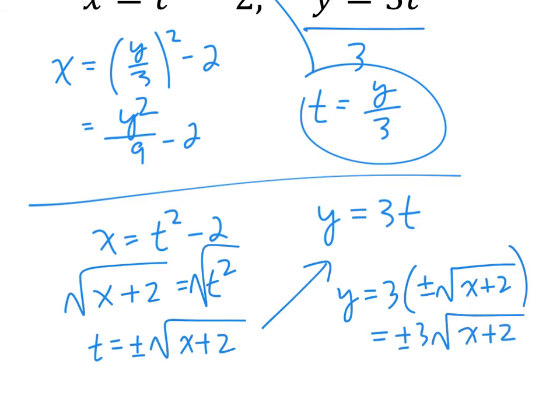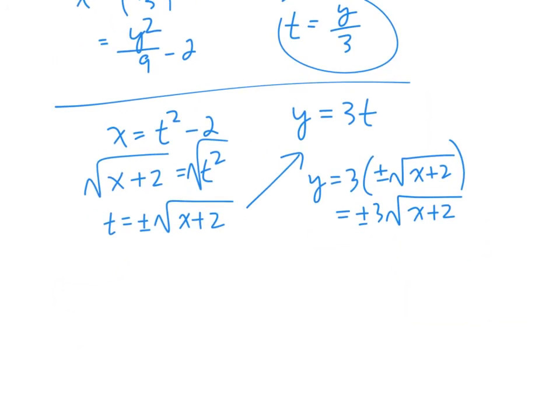Let's talk about what happens if you don't have the plus or minus. When you have a square root graph, remember it goes like a one-wing bird. If you don't have a plus minus, you will only have the positive version — that's the one wing. But this is actually a sideways parabola, so it needs the negative version to create the full parabola. Make sure you do have that plus minus. So this is a sideways parabola.